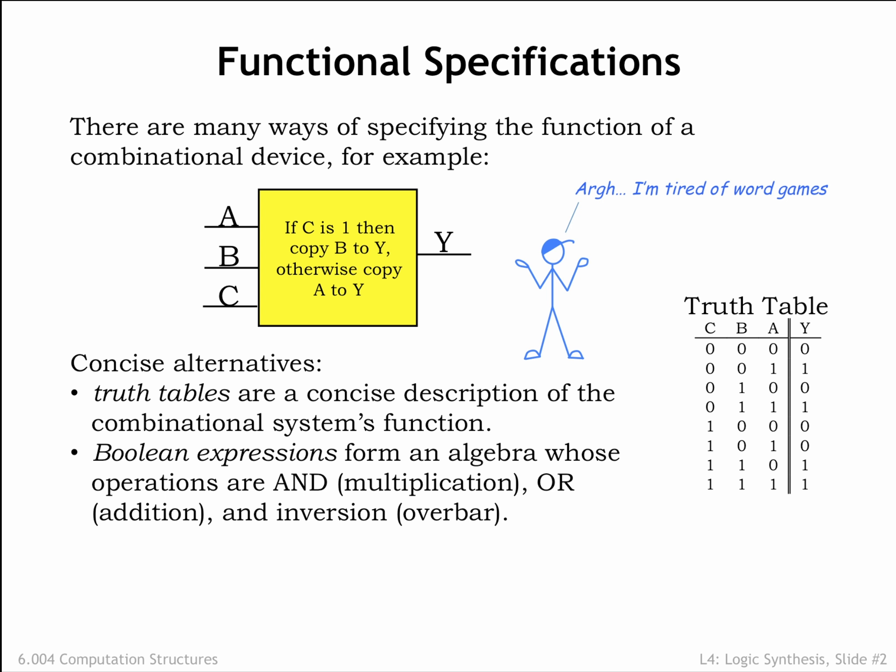It's straightforward to systematically enumerate the 8 combinations, which makes it easy to ensure that no combination is omitted when building the specification. And since the output values are specified explicitly, there isn't much room for misinterpreting the desired functionality. Truth tables are an excellent choice for devices with small numbers of inputs and outputs.